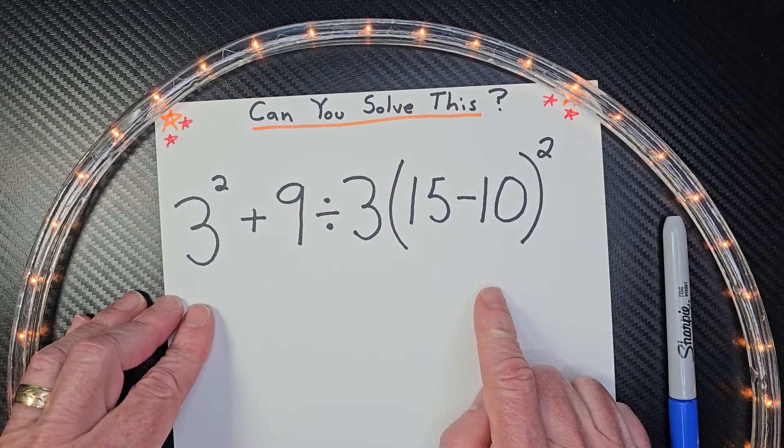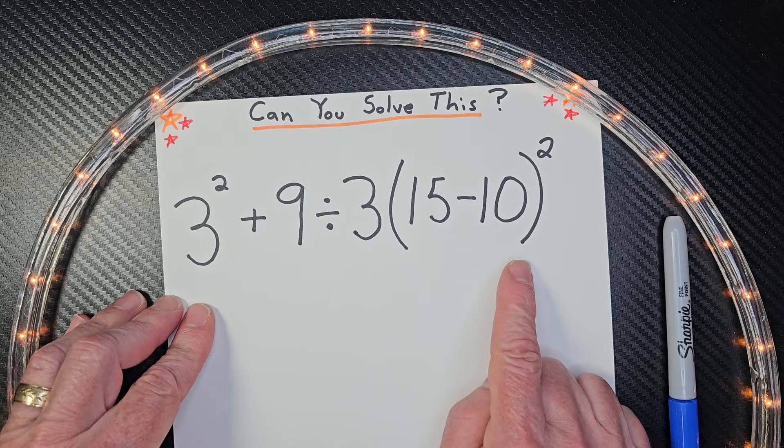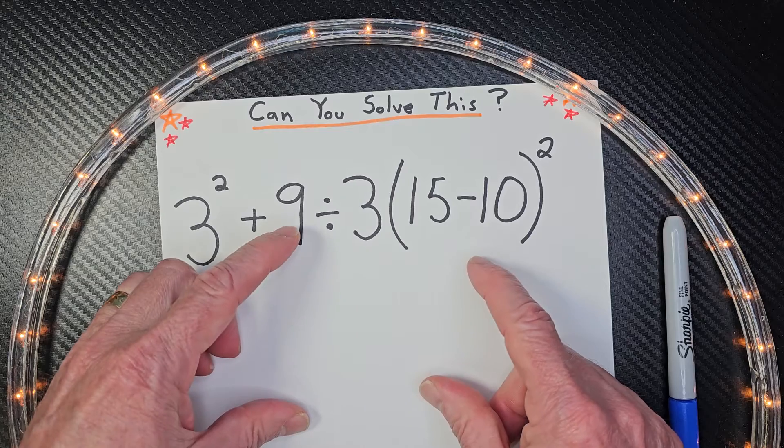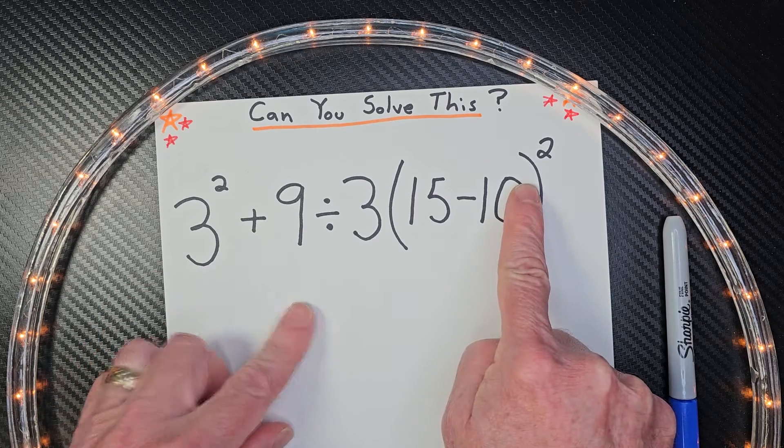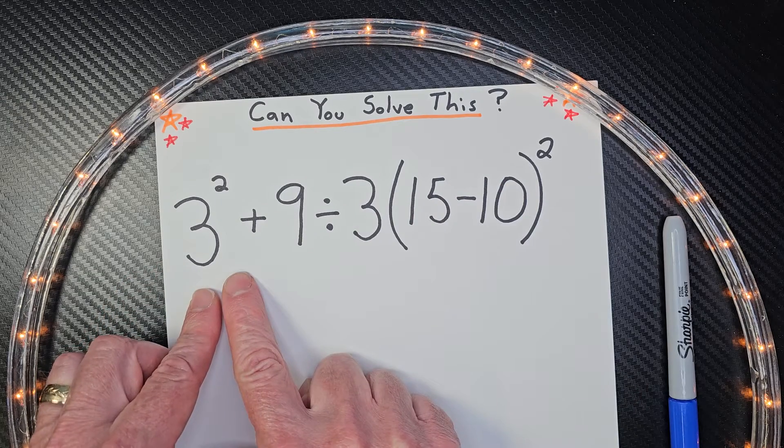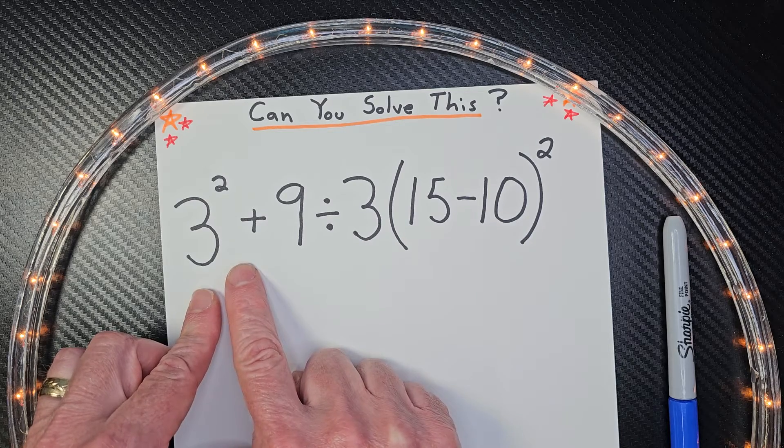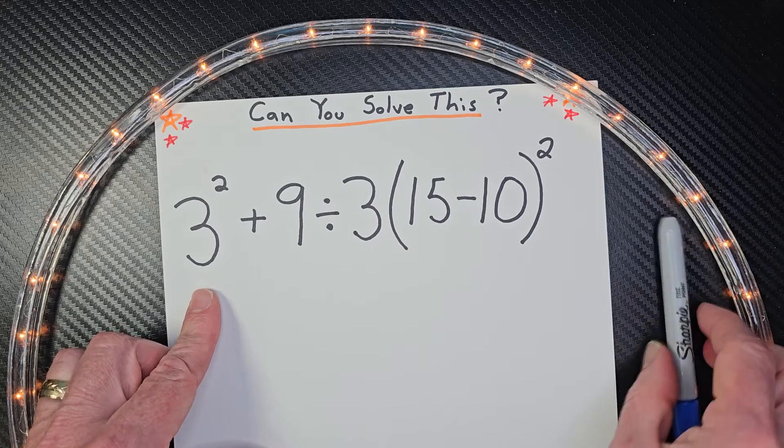All right, let's go ahead and begin. Again, we're using order of operation. Order of operation means that you're doing what's inside parentheses first, then your exponents, and then multiplication and division from left to right, and addition and subtraction from left to right. So let's go ahead and begin.